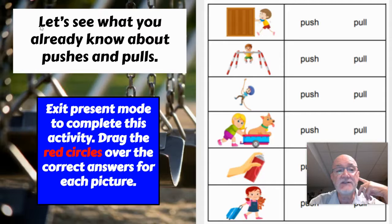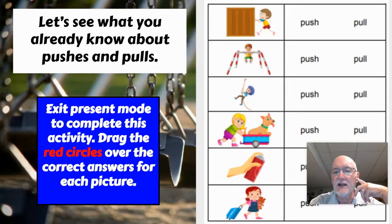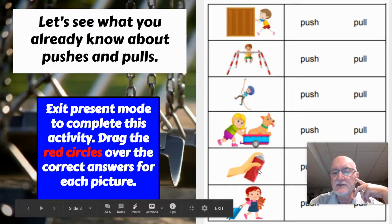This slide says: Let's see what you already know about pushes and pulls. Over here you see a little kid with what looks like a bookshelf or big box, and next to it says Push or Pull. Down here we've got a little kid on a jungle gym, a little girl climbing a rope, a little boy pushing a puppy in a wagon, a can of hairspray, and a little girl going on vacation.